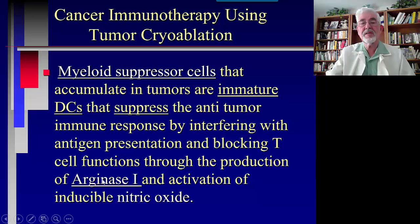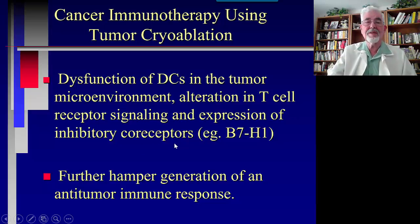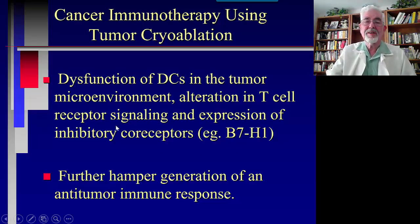Immature dendritic cells block T cell function through the production of Arginase 1 and activation of inducible nitric oxide — just one example of mechanisms we could understand to create treatment and research. Dysfunction of dendritic cells in the tumor microenvironment, alteration in T cell receptor signaling, and expression of inhibitory co-receptors further interfere with generation of anti-tumor response. We'll discuss checkpoints in the next slide.